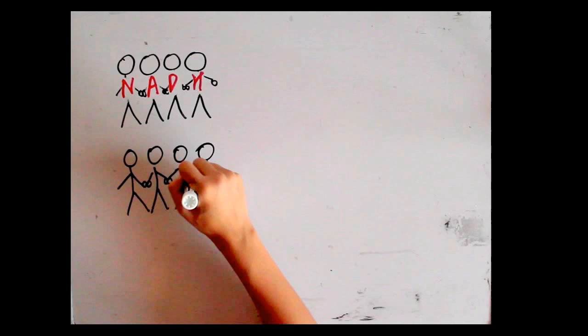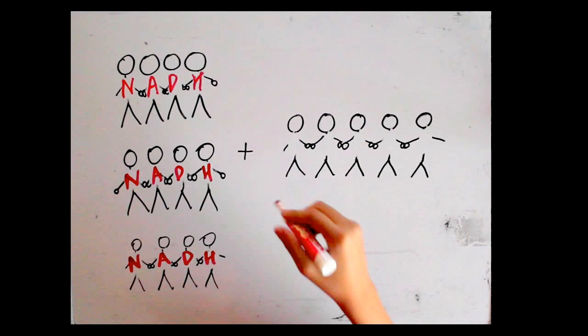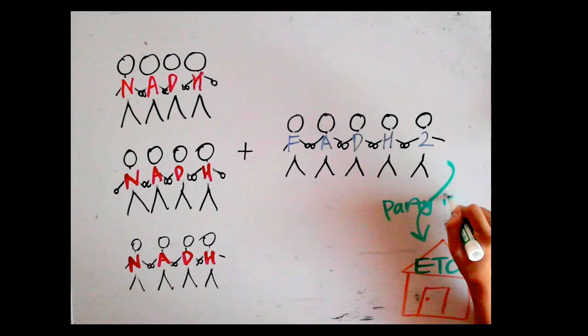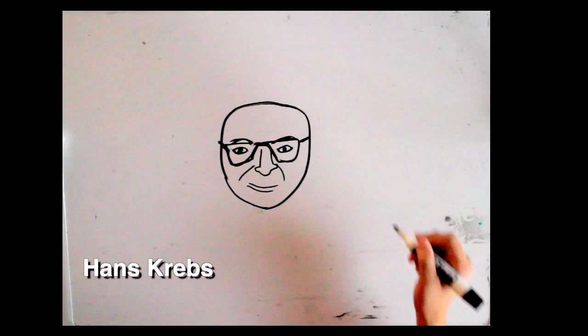Krebs cycle, Krebs cycle: 3 NADH, 1 FADH2 creation, which later goes to the ETC. Krebs cycle, Krebs cycle: 3 NADH, 1 FADH2 creation, and the synthesis of 1 ATP.